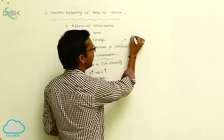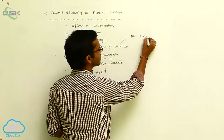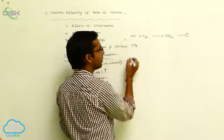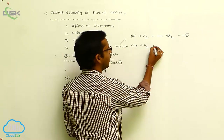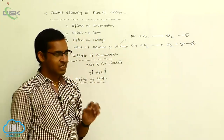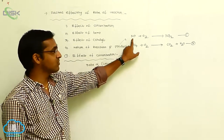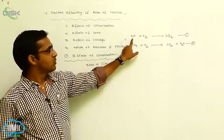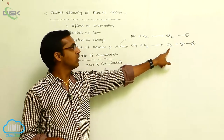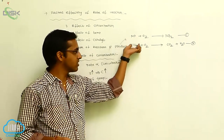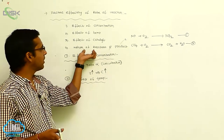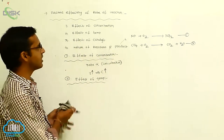For example, NO reacts with oxygen to give NO₂ — that is reaction one. Another example: methane in the presence of oxygen is converted to carbon dioxide and water — that is reaction two. In reaction one, more bond breakages are required so it takes more time. In reaction two, the hydrocarbon easily undergoes decomposition so it is faster. So the number of bond breakages and formations is important in determining the nature of reactant and product.